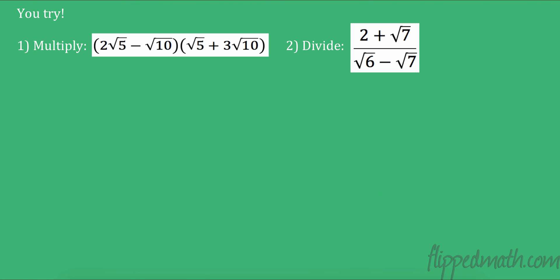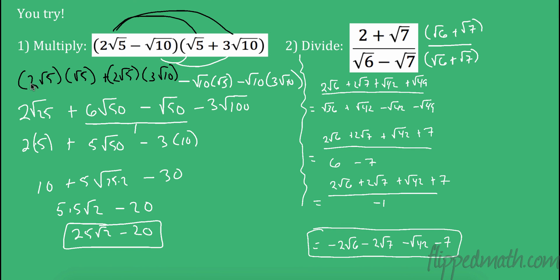Pause the video and try these two problems yourself. For the first, I multiplied 2 radical 5 times radical 5 and 2 radical 5 times 3 radical 10, then distributed negative 10. Some terms combined, and radicals simplified to radical 25 and radical 100. For the second, multiply by the conjugate radical 6 plus radical 7. Radical 42 has no perfect squares so it stays. 6 minus 7 gives negative 1, so divide everything by negative 1 to get negative 2 radical 6 minus 2 radical 7 minus radical 42 minus 7. That's multiplying and dividing radicals — good luck on your mastery check!